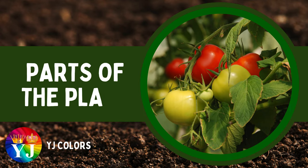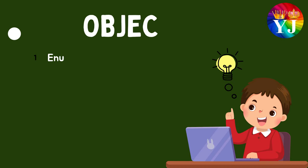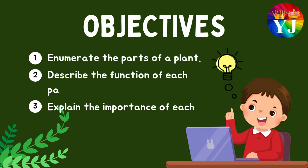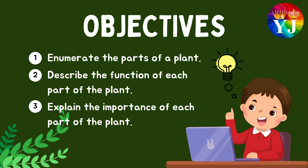Parts of the Plant. Objectives: 1. Enumerate the parts of a plant. 2. Describe the function of each part of the plant. 3. Explain the importance of each part of the plant.